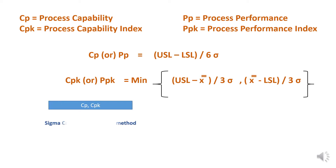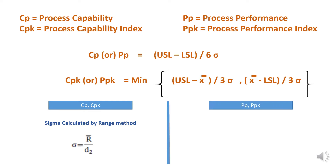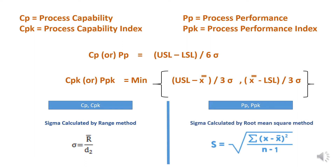First we will understand the sigma calculation. For Cp and Cpk, we need to use the range method. We first calculate the range, then use it to calculate sigma for Cp and Cpk. For Pp and Ppk, sigma is calculated using the root mean square method.